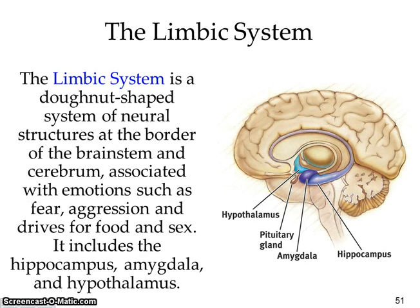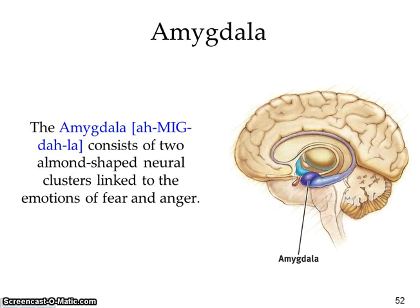The limbic system is the donut-shaped part of our brain, housing things like emotions, fear, aggression, and drives for food and sex. It contains the hippocampus, amygdala, and hypothalamus. The amygdala deals with fear and anger — people with antisocial personality disorder and serial killers sometimes have a larger amygdala than others, which might explain heightened aggression.